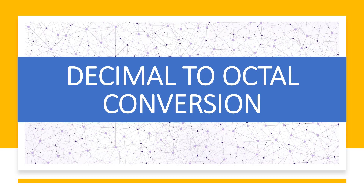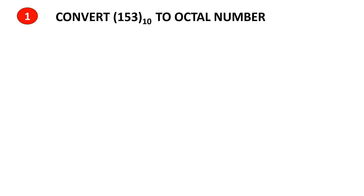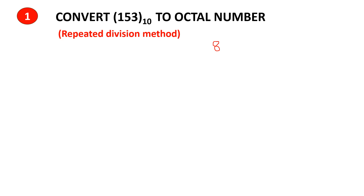Decimal to octal conversion, problem one: convert the decimal 153 to an octal number. To do this we use a method called the repeated division method. Since the base of the octal number is 8, we use repeated division with 8.